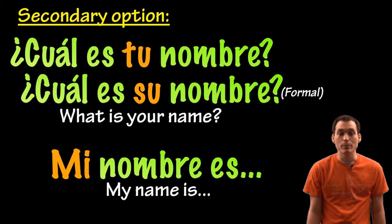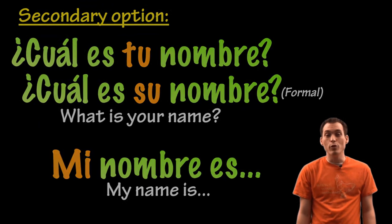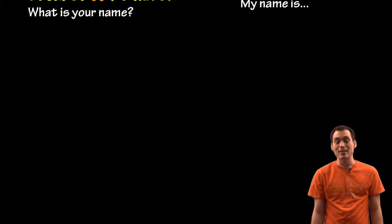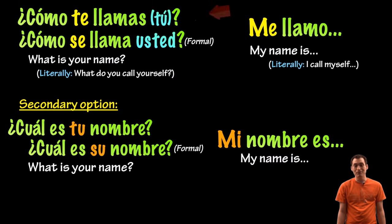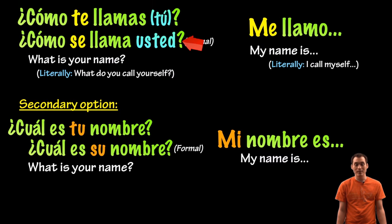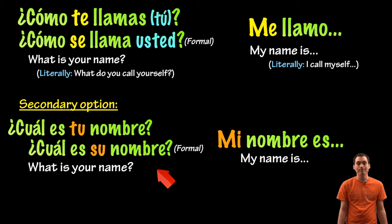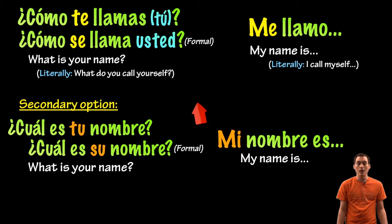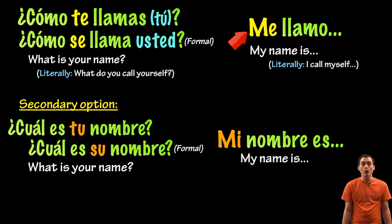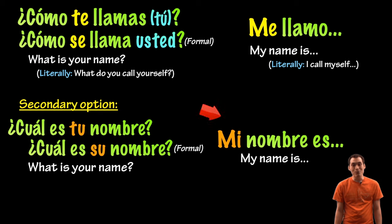To summarize, we have multiple ways to ask someone for their name: ¿Cómo te llamas?, ¿Cómo se llama usted?, ¿Cuál es tu nombre?, ¿Cuál es su nombre? And to answer those, we could say 'me llamo' or 'mi nombre es.'